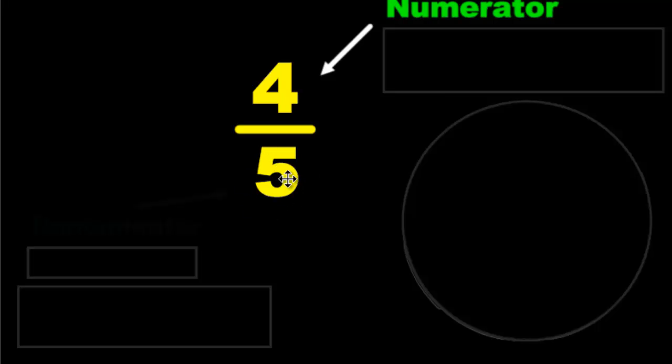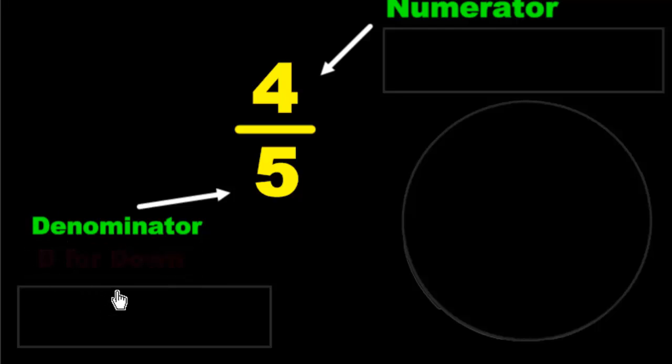And the number on the bottom, that 5, we don't say the number on the bottom is 5. We say the denominator is 5. And denominator is easy to remember because it starts with a D. D is for down.